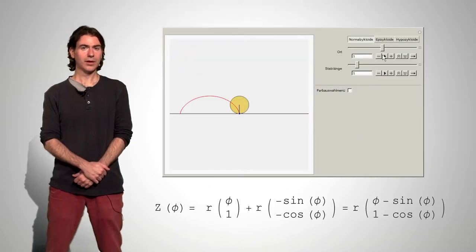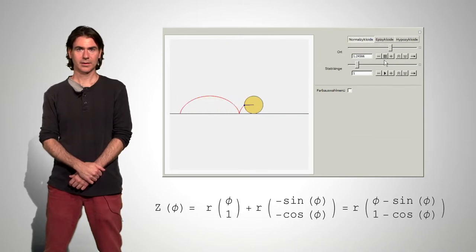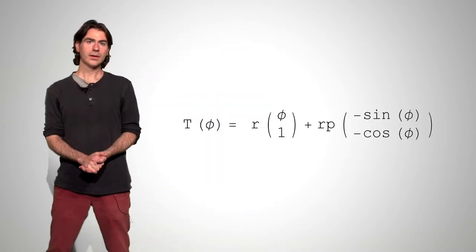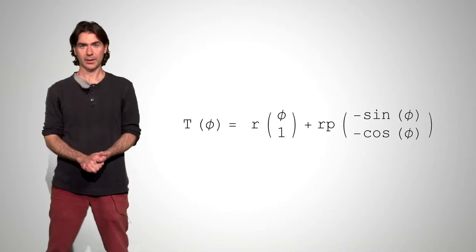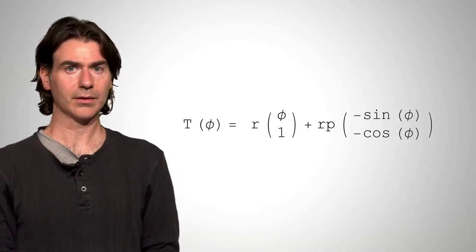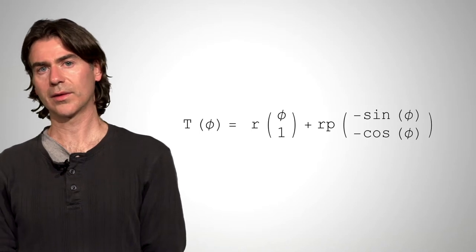Here we see a cycloid which is generated by setting r equal to one. Finally, we'd like to know what is the path traveled by a point which does not lie on the periphery of the wheel. Think of something like the valve on a bicycle wheel tire. Here, the radius of the rotating point differs from the wheel radius. We'll call the radius of the rotating point rp. The equations have to be modified so that rp is used for the rotation, but for the forward motion we'll hold on to the wheel radius r. We call such a curve the trochoid.